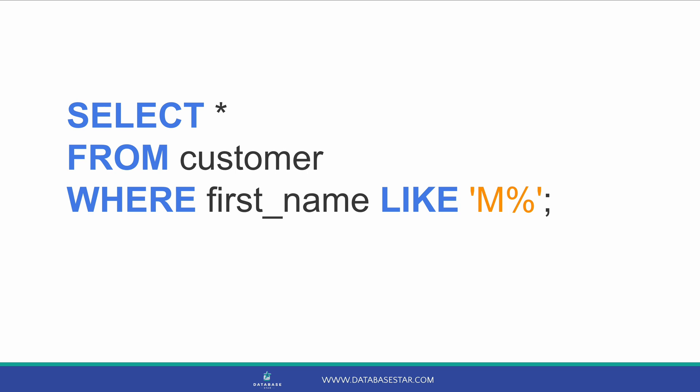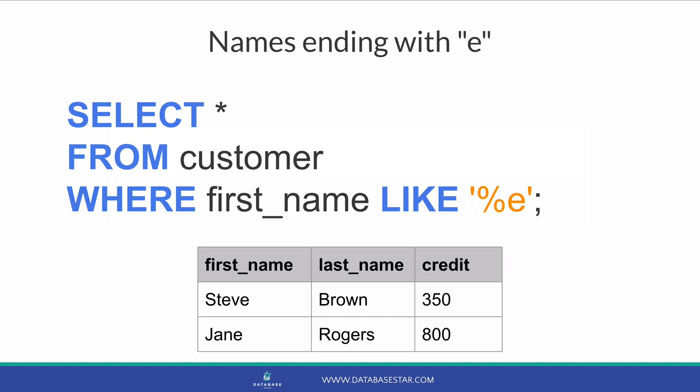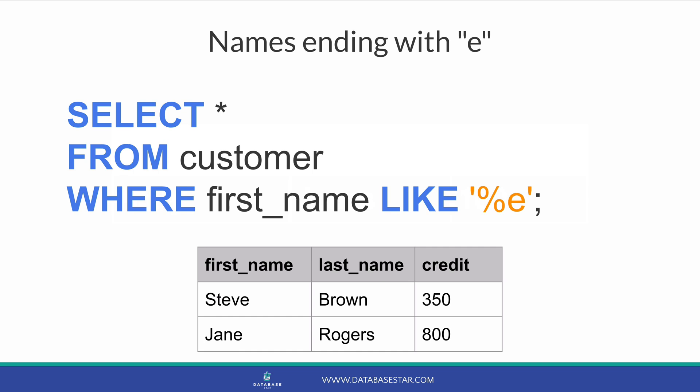We enter a semicolon and then run the query. We can see the results here — all customers with a name beginning with M are shown. We can use the percent character in many different combinations. We can use it at the start to find any name ending with E by saying %E, or we can use it at the start and the end to find all names with an S in it: %S%.